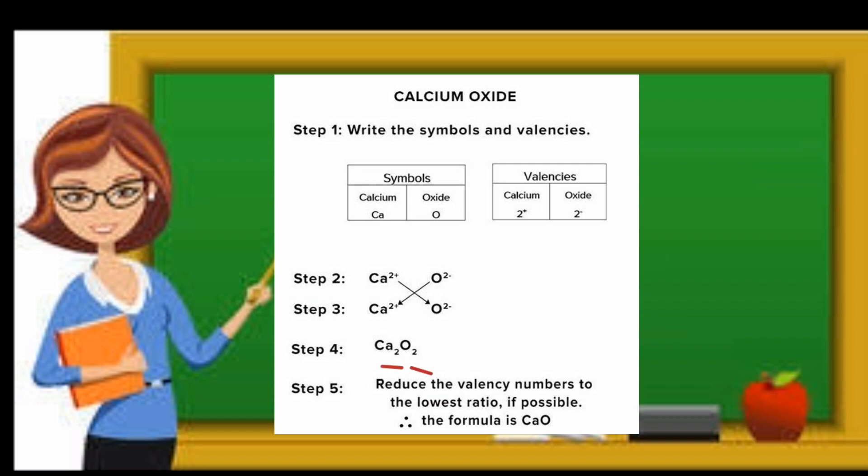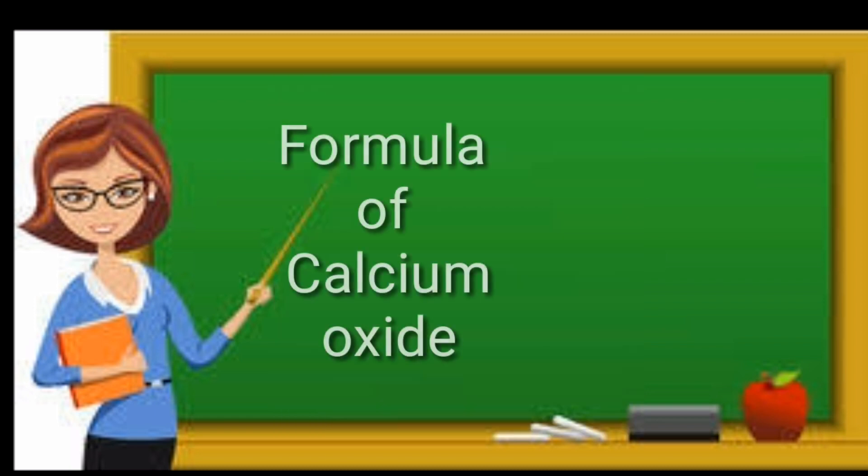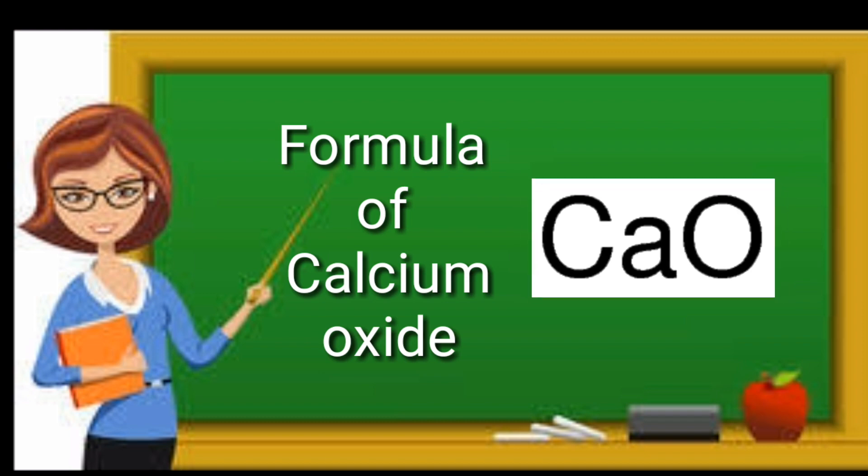Now here there is a little bit different type of rule to be applied. As the valency has a common factor, we shall be taking the HCF of the subscripts and then divide it by the HCF to get the lowest ratio. We will finally get the formula of calcium oxide as CaO. Instead of writing Ca2O2, we write the formula as CaO.